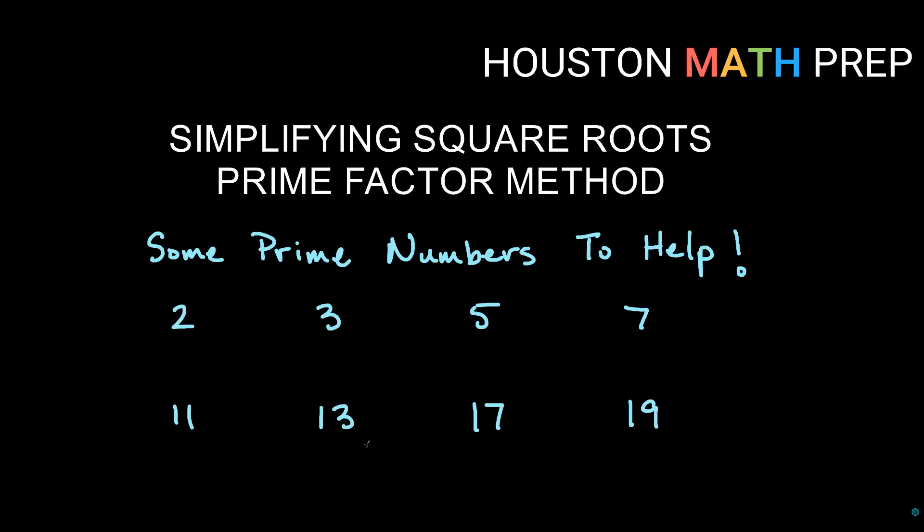Hey everyone, Houston Math Prep here. We are doing our second video on simplifying square roots. In this video, we're going to use the prime factor method or the factor tree method. I've just written down some of the smallest prime numbers to help us out. You don't really need to memorize these — you'll be able to figure it out once we start breaking things down. Let's go ahead and look at our second way to do this.